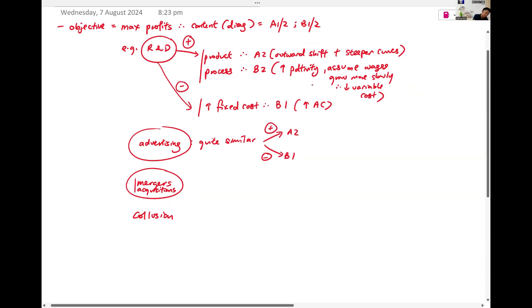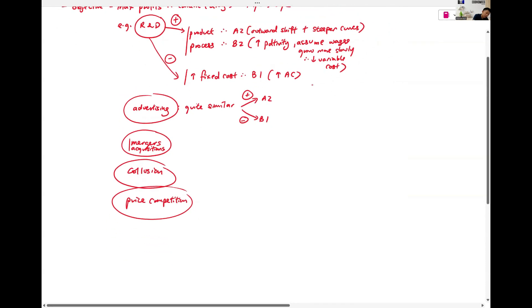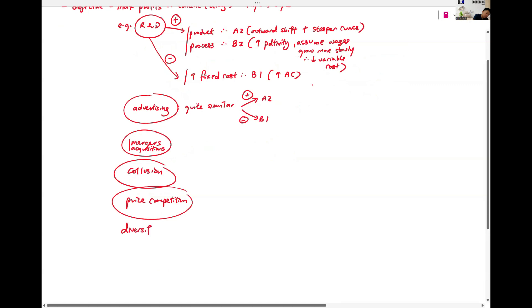Collusion. Price competition. Diversification. Sometimes they even have cost-cutting. Lowering of costs as a strategy.